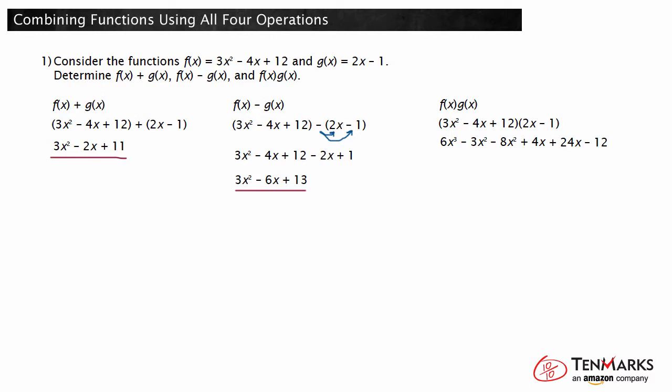Now we can combine like terms. 6x cubed cannot be combined with any other term. Combining negative 3x squared and negative 8x squared gives negative 11x squared. Combining 4x with 24x gives 28x. And negative 12 cannot be combined with any other term. So, f of x times g of x is 6x cubed minus 11x squared plus 28x minus 12.